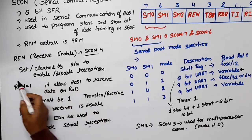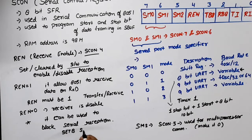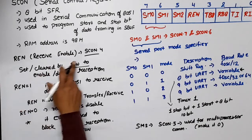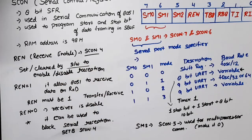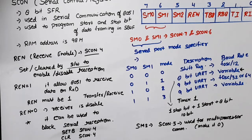To set REN to 1, use the instruction: SETB SCON.4. To clear it (REN = 0), use: CLR SCON.4.